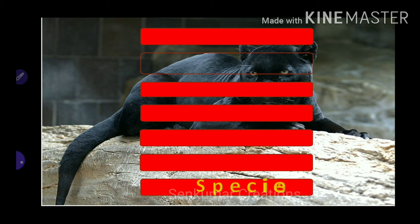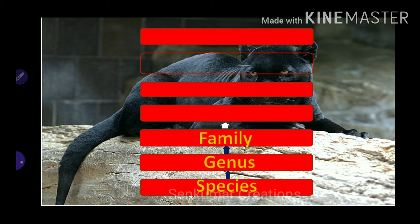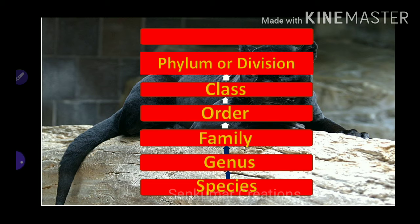Now we can see the order of classification. The first level is species — the lowest level — and from species the next one is genus, then family, then order, then class, then phylum (or division), and the last one is kingdom. The largest group is the kingdom. In order: Kingdom, Phylum, Class, Order, Family, Genus, and Species.